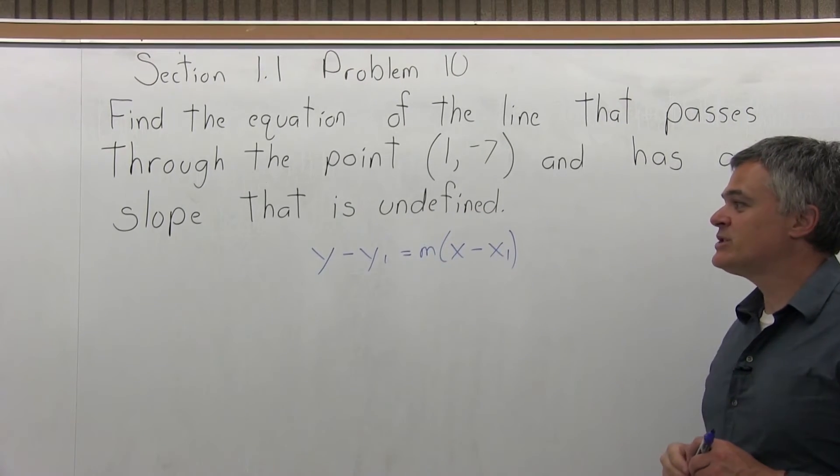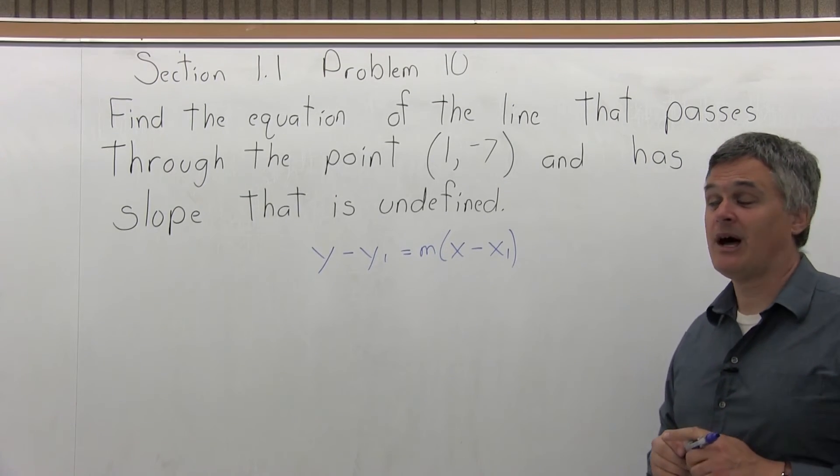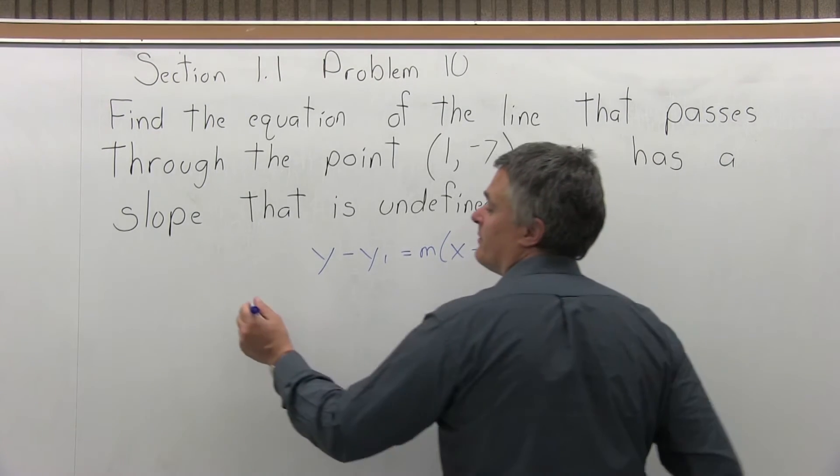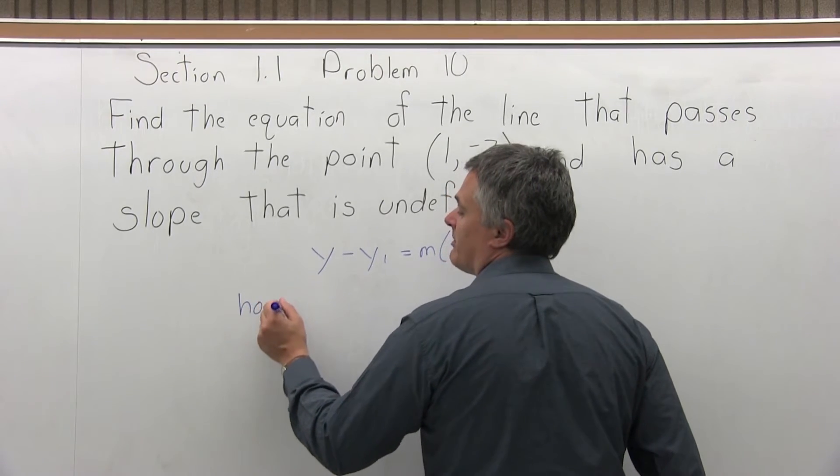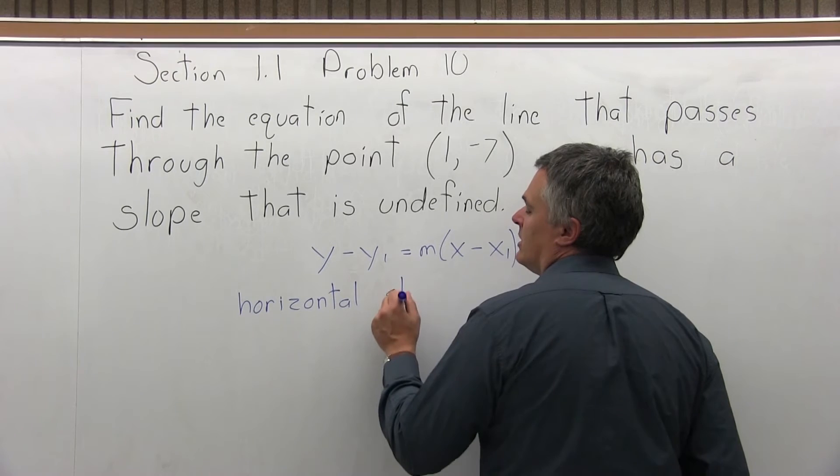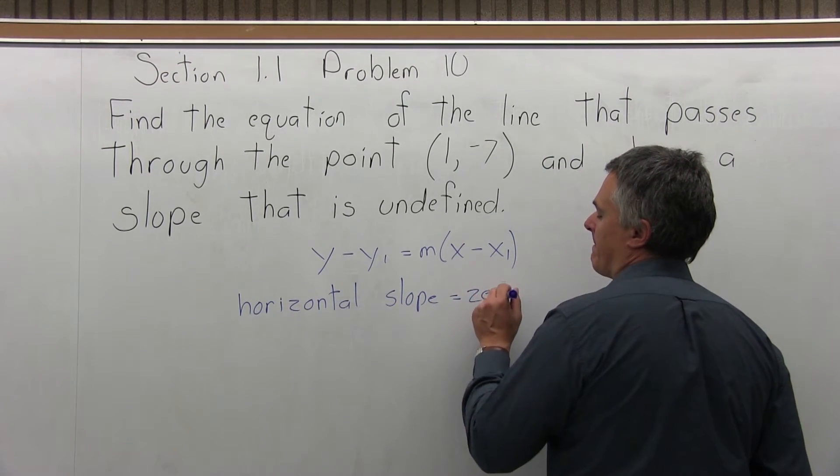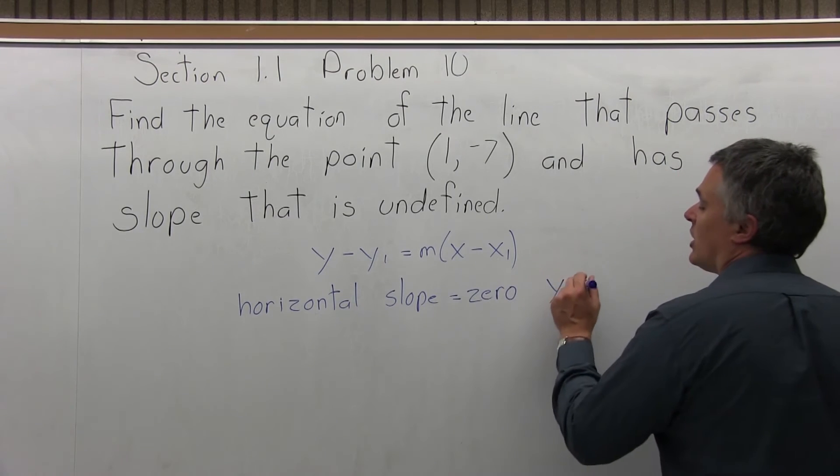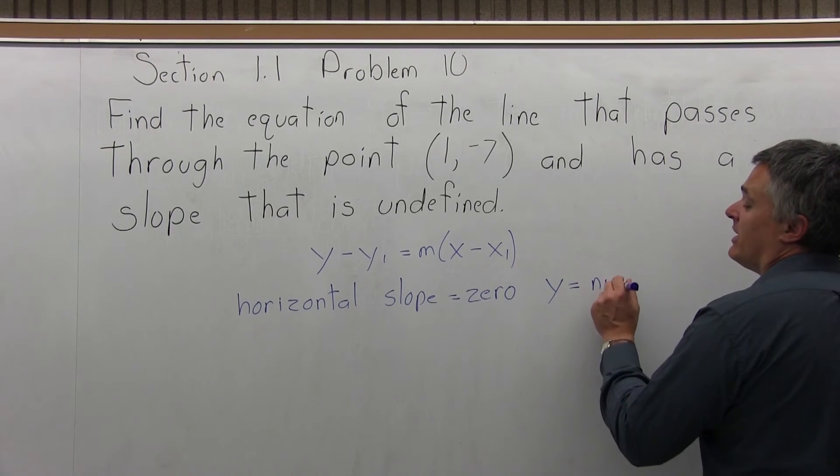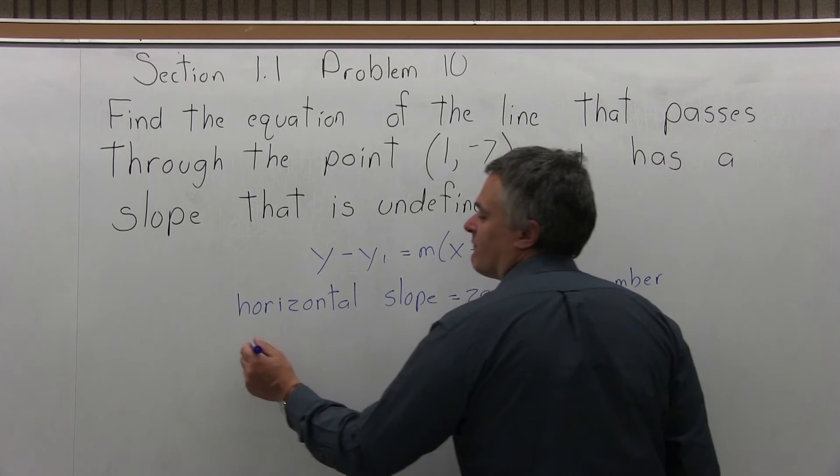So the two special situations were, if you remember, horizontal and vertical lines. So if you don't remember them, horizontal slope is zero, and it's always y equals some number for the form of a horizontal line.